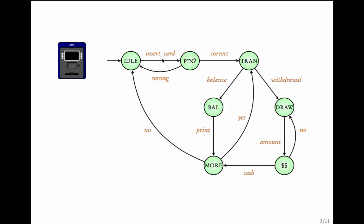These phases are called states. These edges from one phase to the other are called transitions. Each transition occurs due to an action. The action could be external. For example, insert card is an external action which is given by the user. Or the action could be internal. Print is an internal action.